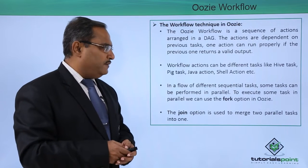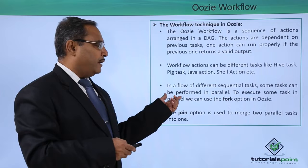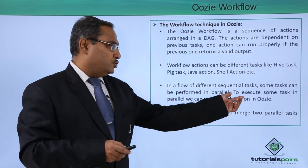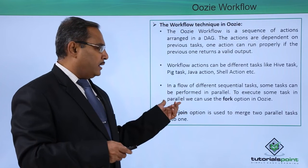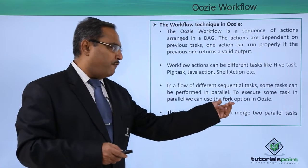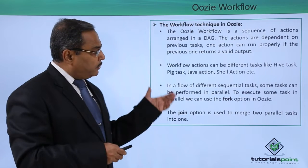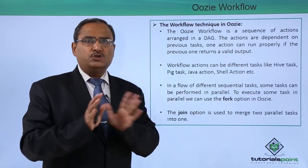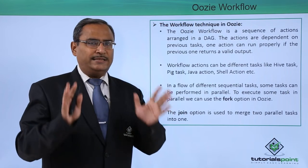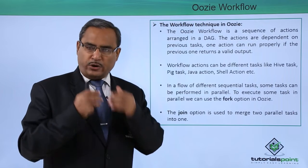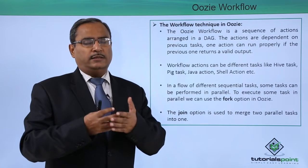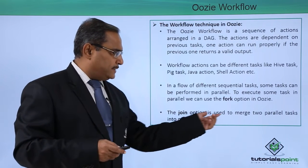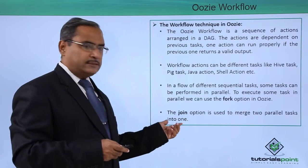In a flow of different sequential tasks, some tasks can be performed in parallel and some tasks can be performed only sequentially. To execute some tasks in parallel, we can use the fork option in OZI. If we want to execute some tasks in parallel, we use the fork option so that two tasks can execute in parallel. Later we can use the join option so that the sequence gets merged. The join option is used to merge two parallel tasks into one.